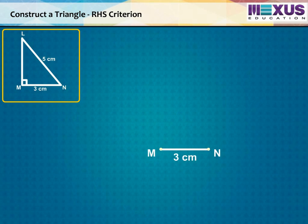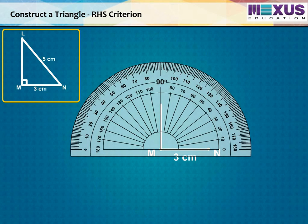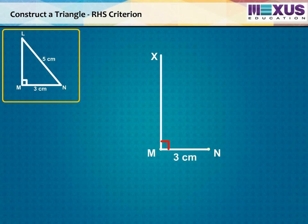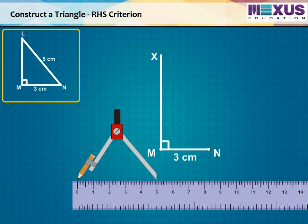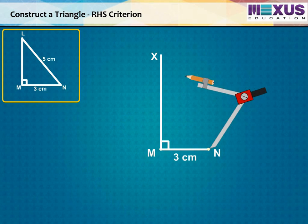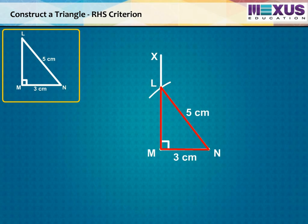Draw line segment MN of length 3 cm. From point M, draw a line XM such that XM perpendicular to MN. Now, with N as center, draw an arc of radius 5 cm that cuts the line XM in L. Now, join LN. Thus, we get our required triangle LMN.